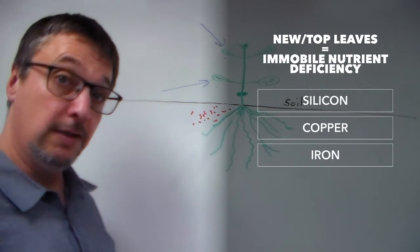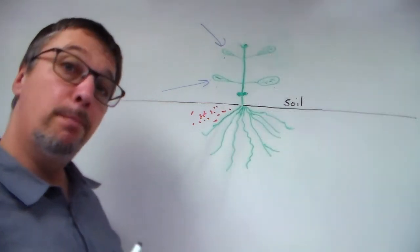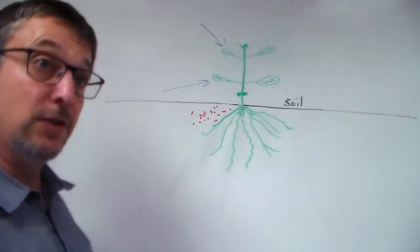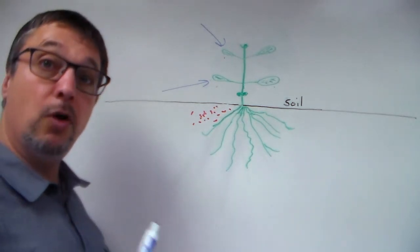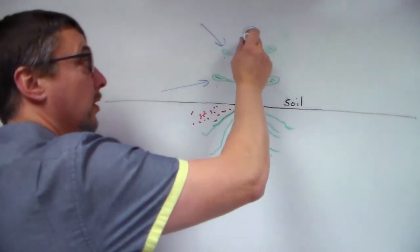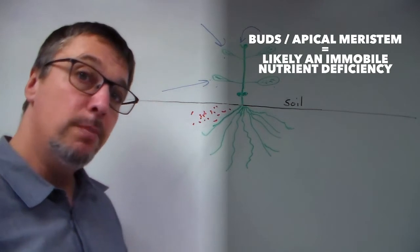Now boron and calcium are also immobile nutrients and they're needed where plants are growing a lot, at the very tippy top here. So you might notice that the apical meristem or the buds of the plants aren't growing properly. That would suggest it's a boron or calcium deficiency.